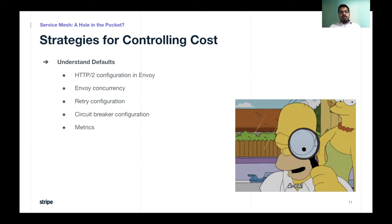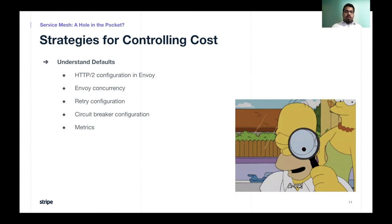If you misconfigure Envoy's concurrency or HTTP/2 configuration, it can degrade performance, thereby increasing your costs. If you leave circuit breaker or retry configurations to default, it can affect how your requests are routed in a failure scenario, which can increase your network usage and thereby increase costs. And as mentioned, metrics by default can overwhelm your metric system, so understanding the default behavior of your service meshes or proxies is important to cut down costs associated with metrics.